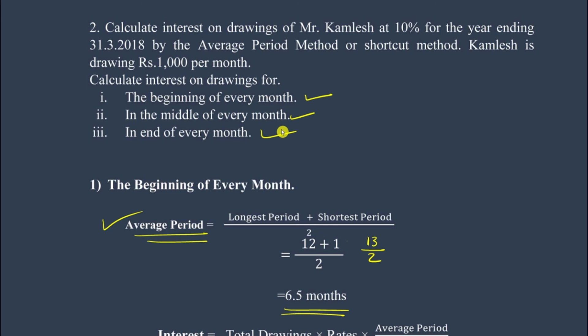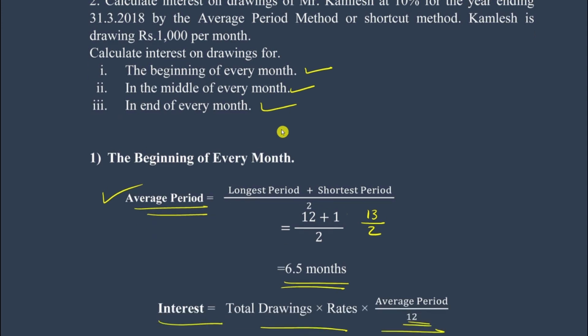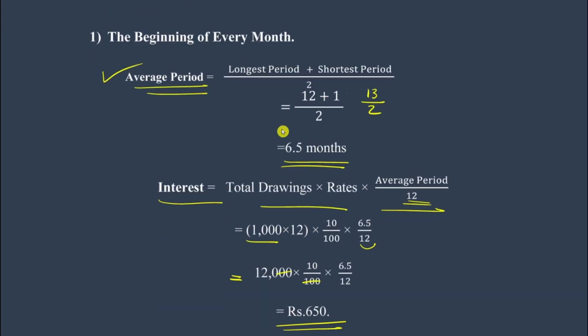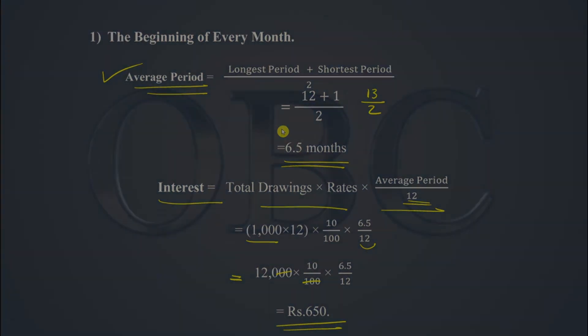So this is how you solve this sum. We calculated interest on drawings for all three methods — beginning, middle, and end of every month — using the same simple average period technique. Results: 650, 600, and 550 rupees respectively. If you like this video, hit like and share with your friends. See you in the next video!